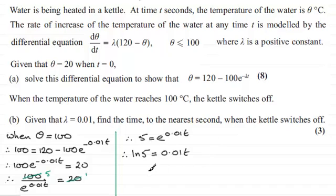So to get t, t is going to equal ln(5)/0.01. And if we do that, we end up with t = 160.9 and so on.